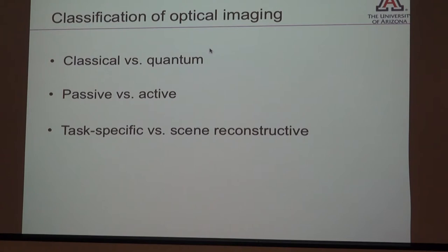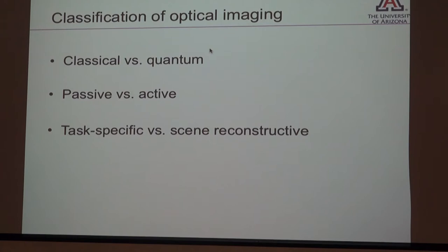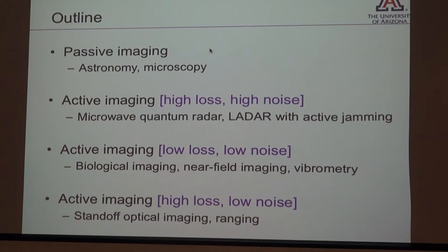Passive versus active is another distinction: passive imaging is where the scene is naturally illuminated or self-luminous, while active sensing involves sending photons to an object and analyzing the return. Task-specific versus scene-reconstructive is yet another classification. Scene-reconstructive imaging aims to get a full reconstruction — a picture or a measurement of a continuous field — whereas task-specific imaging targets something very specific, like whether a target is present or how many point sources exist. If you know something specific about the scene, you can develop very powerful methods to achieve better performance.